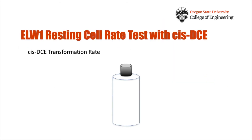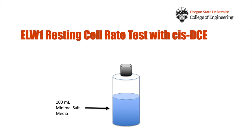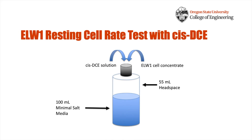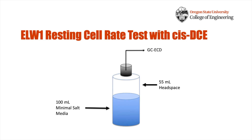A resting cell rate test was performed to determine the rate at which ELW1 could degrade CIS-DCE and ELW1's capacity — how much CIS-DCE a given amount of ELW1 biomass was able to degrade. Glass bottles with butyl septa caps were prepared with a liquid media volume of 100 mL and a gas volume of 55 mL. A saturated solution of CIS-DCE in water was injected into the bottles along with an ELW1 cell concentrate. The bottles were placed on a shaker table in a 30°C room to ensure equilibrium between the gas and liquid phase, and the headspace was analyzed over time using gas chromatography with an electron capture detector. This monitored the CIS-DCE concentration in the gas phase, which was then used to determine the liquid phase concentration using Henry's law, allowing the rate and capacity to be calculated.